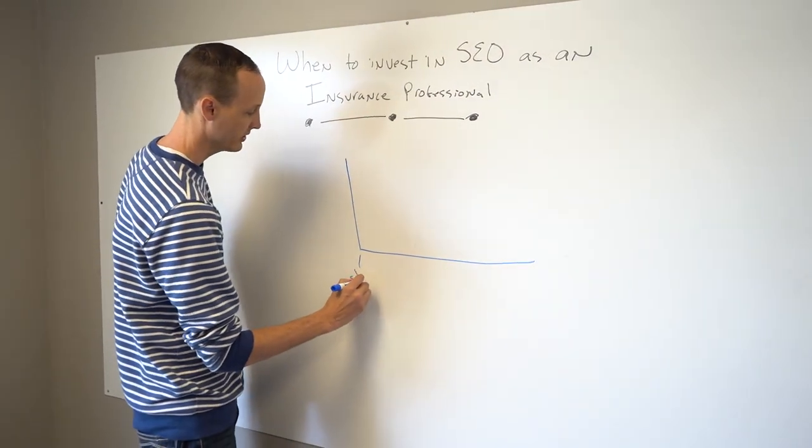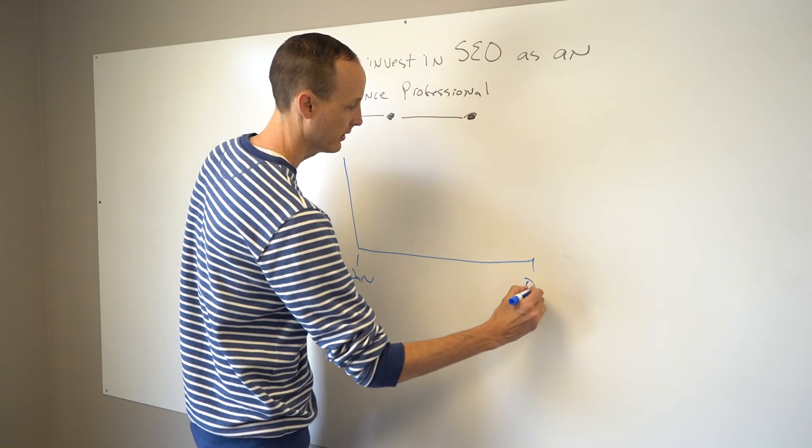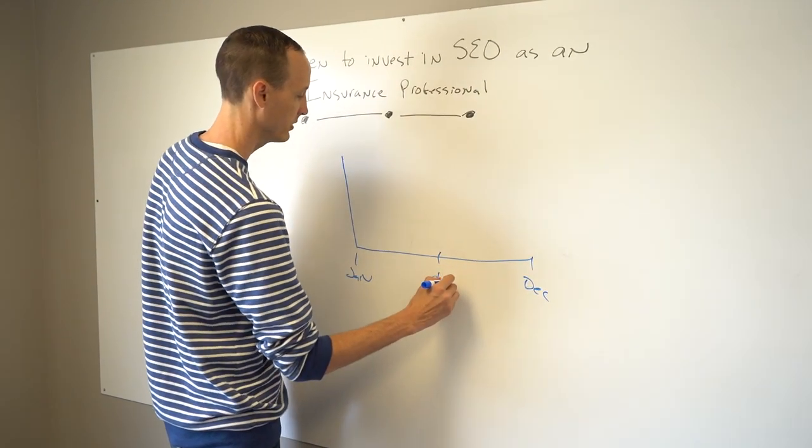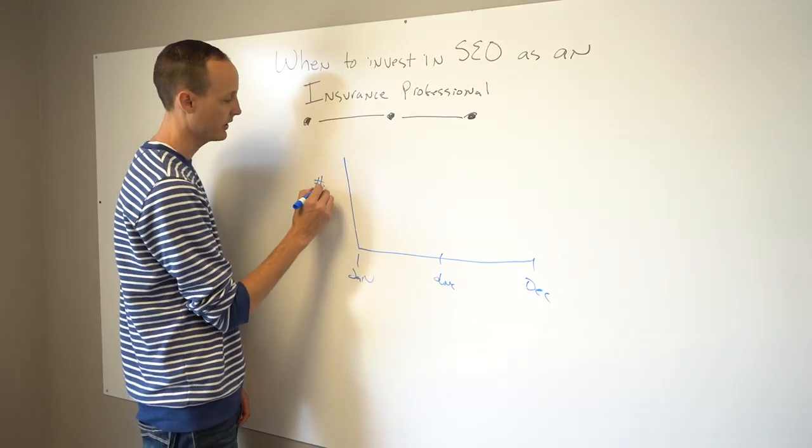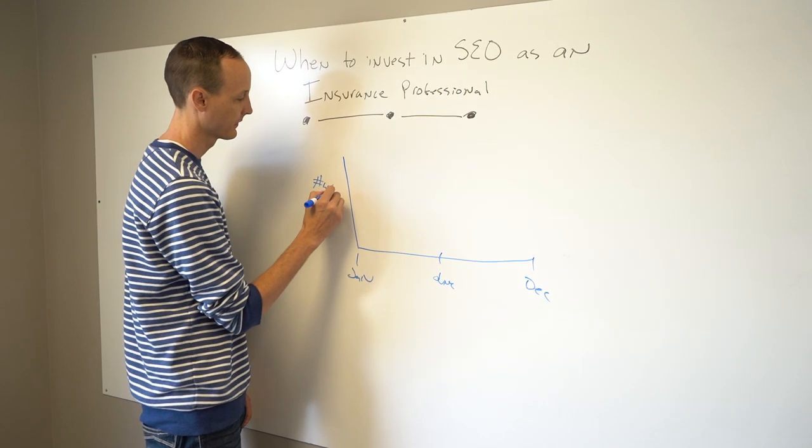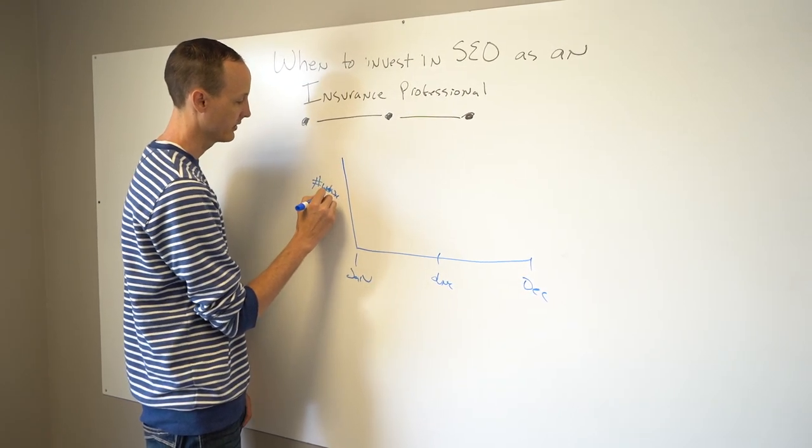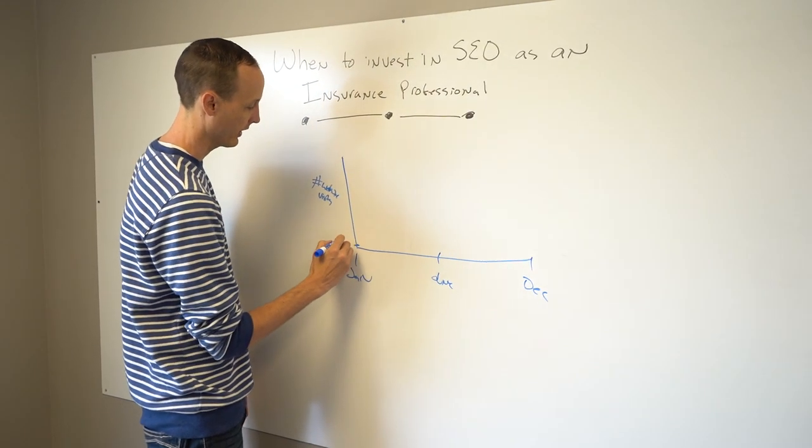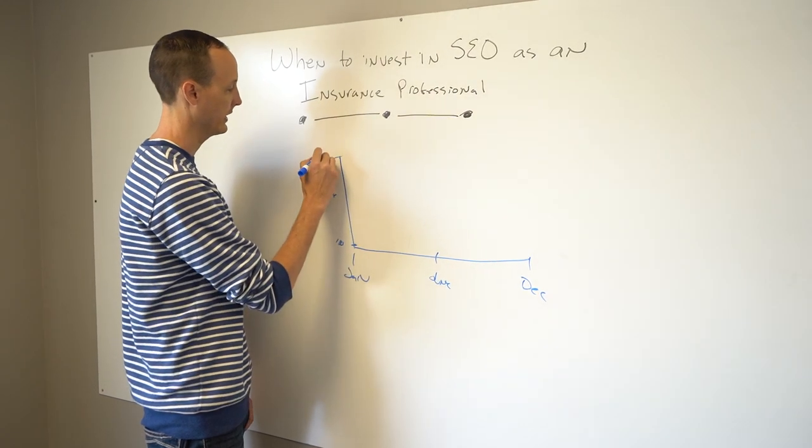What I want to do here, so this is January, this is December, right? This is June. Now, over here, you've got your number of website visits. Now, so let's say down here we've got 100, and up here we've got 10,000.